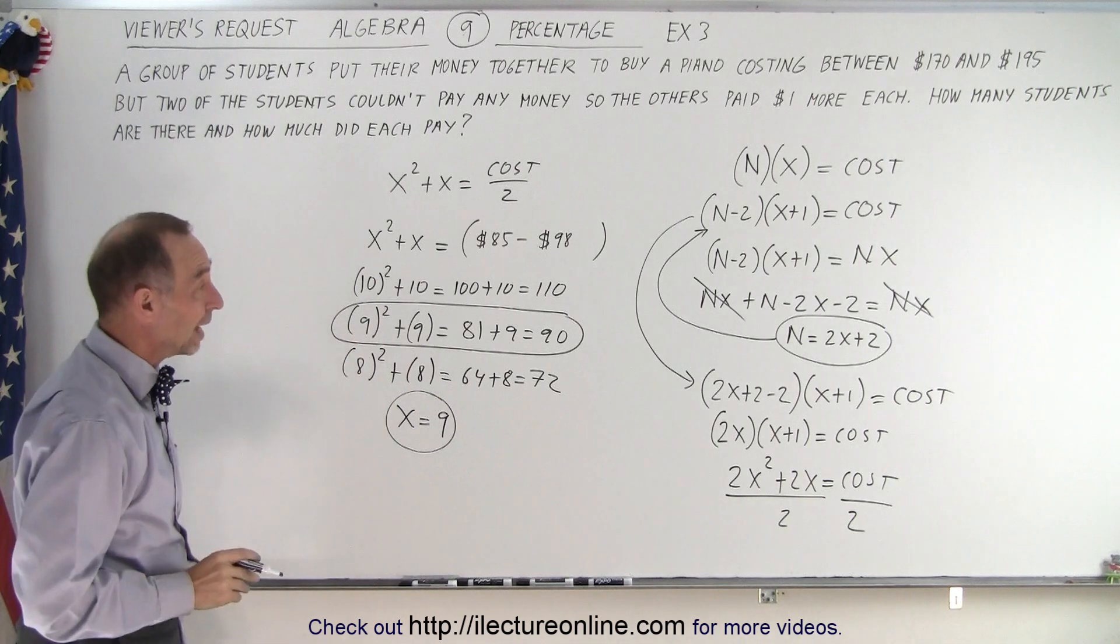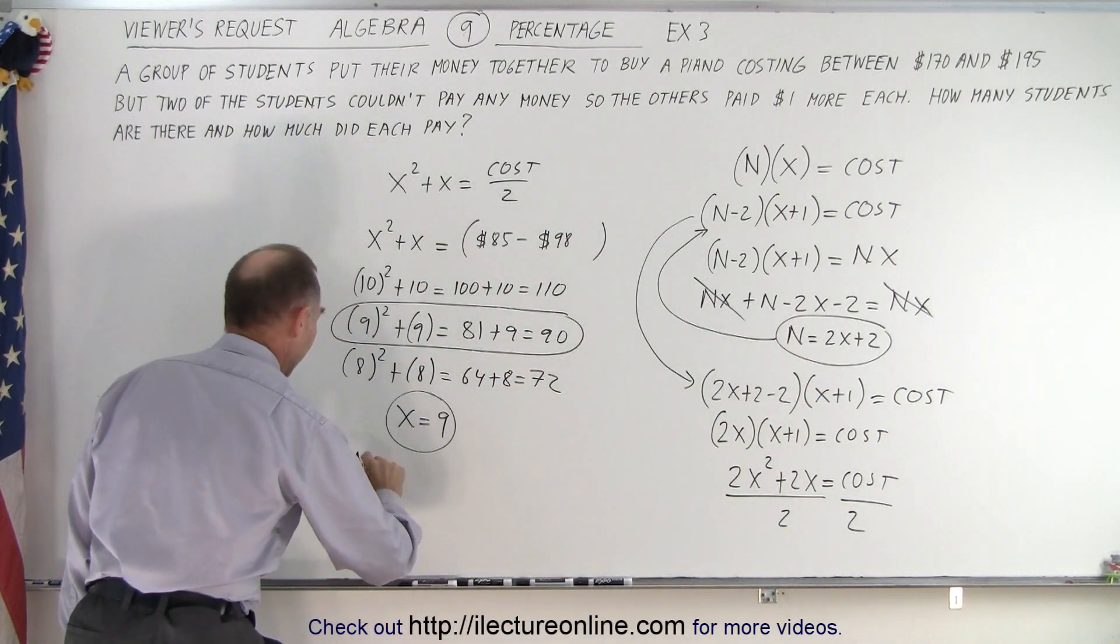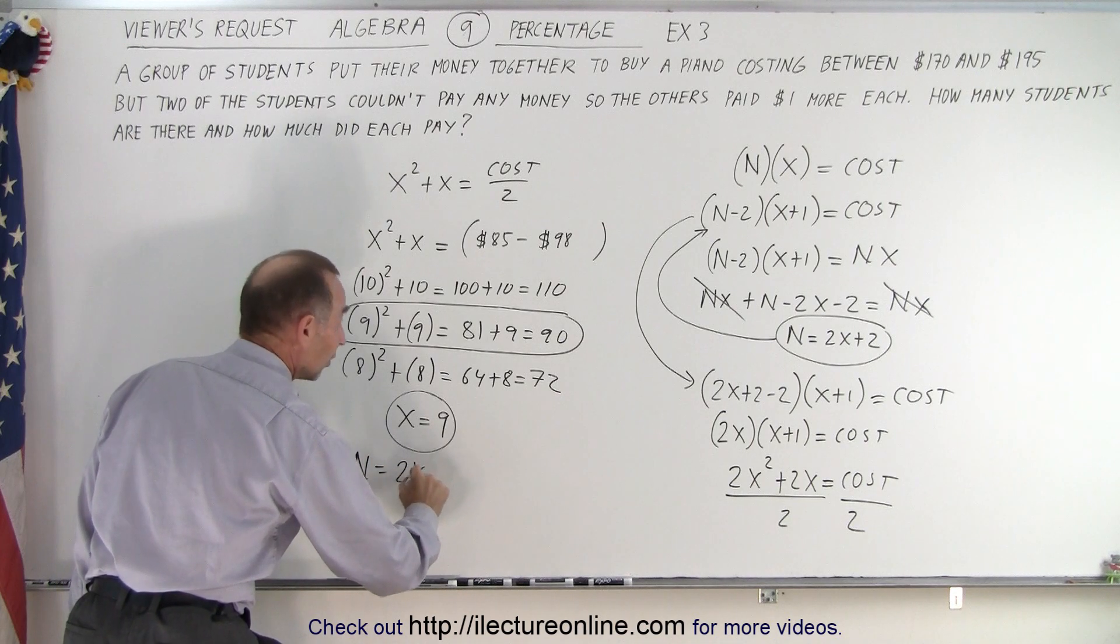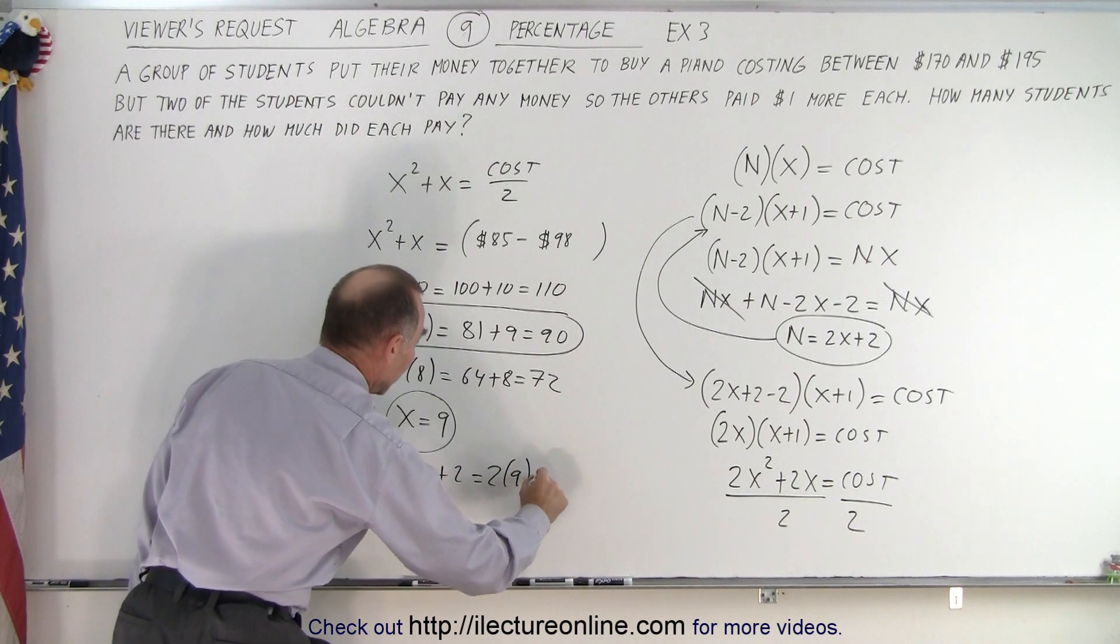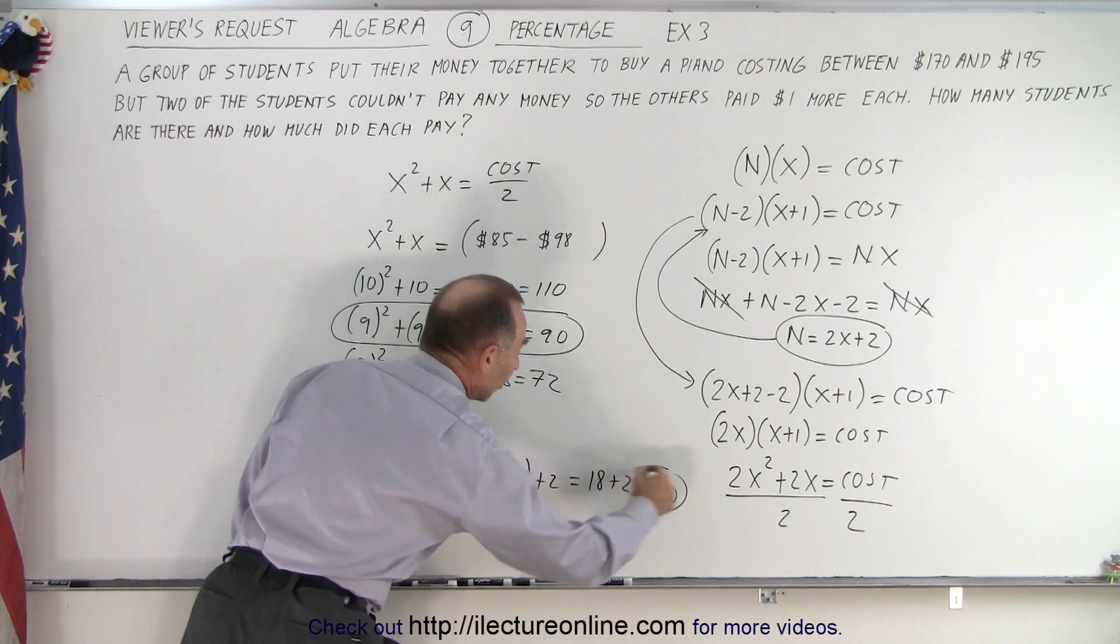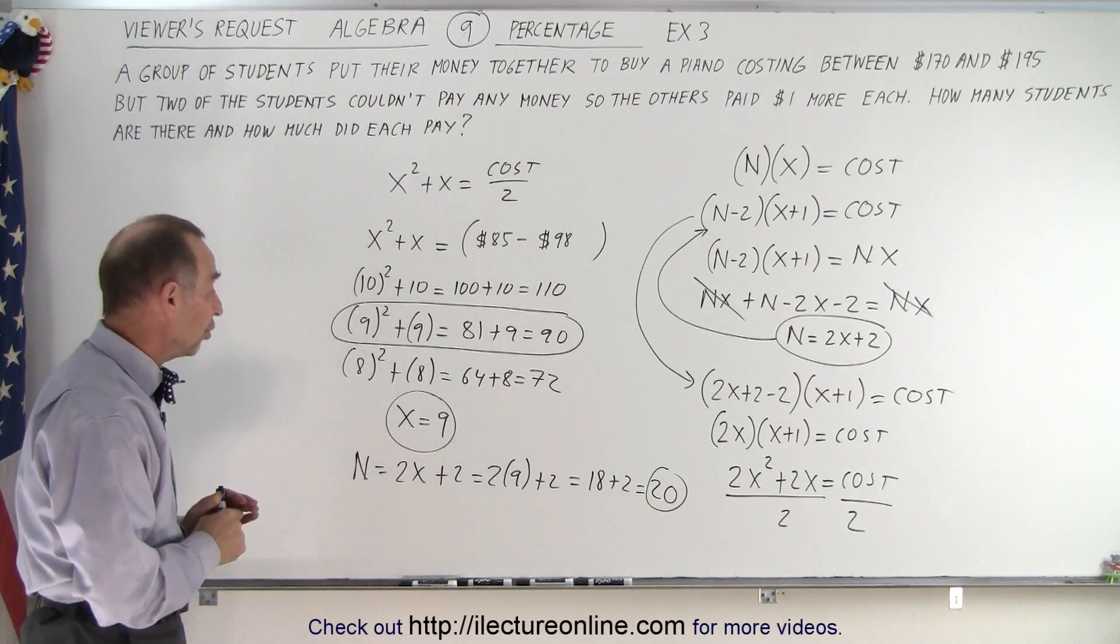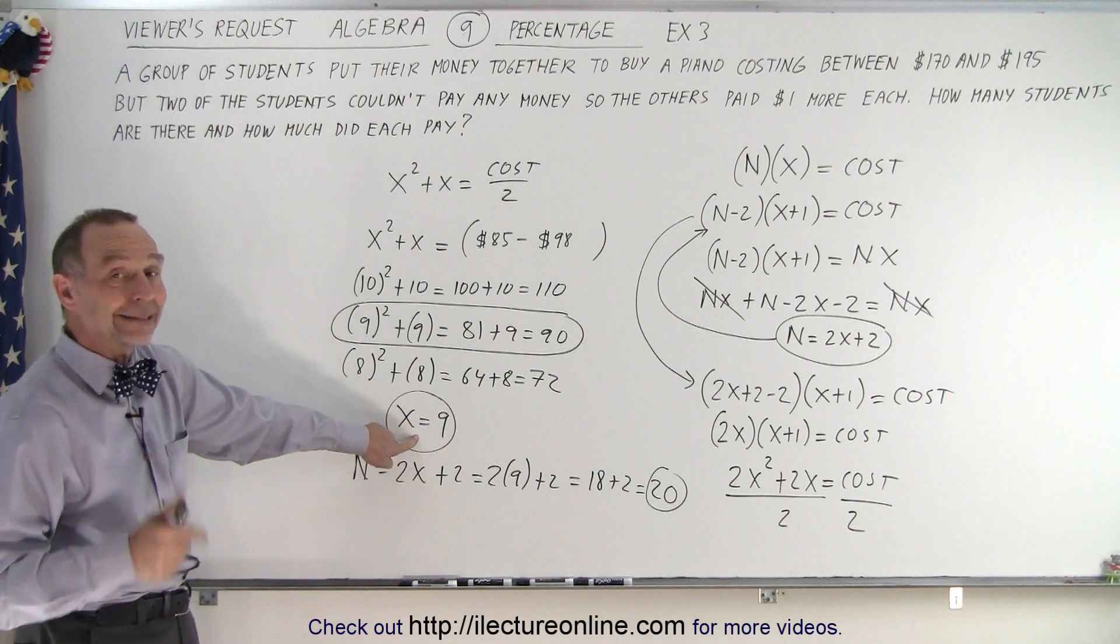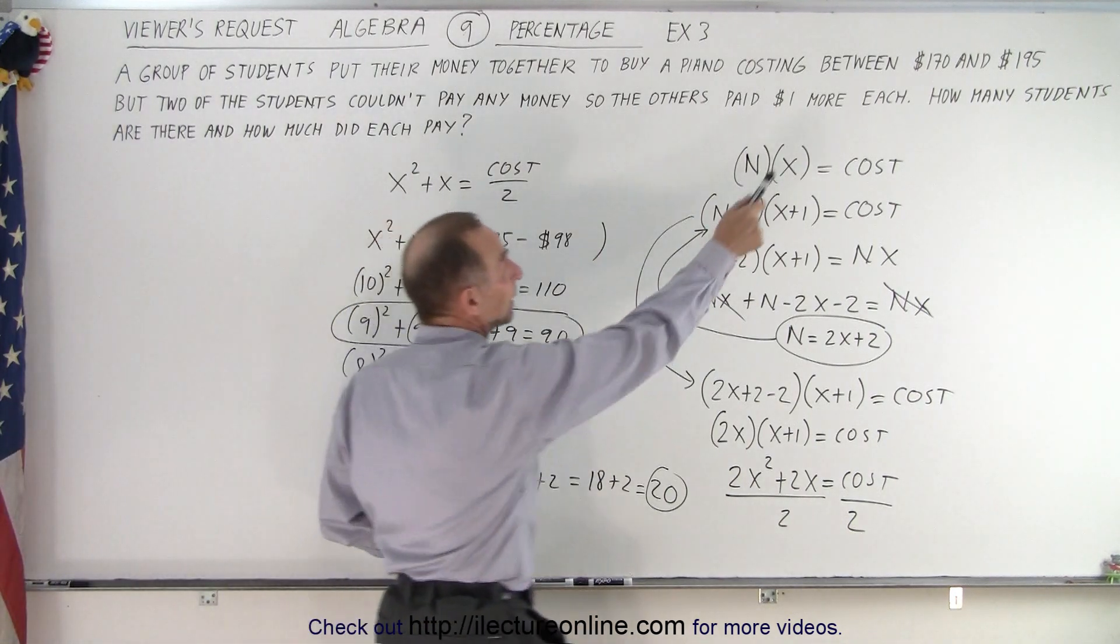Alright, if x is equal to 9 and we have an equation that gives us n, we say that n which is equal to 2x + 2, which is equal to 2 times 9 + 2, which is equal to 18 + 2, which is equal to 20. So what that tells us is that originally there were 20 students and each of them was supposed to put in $9.